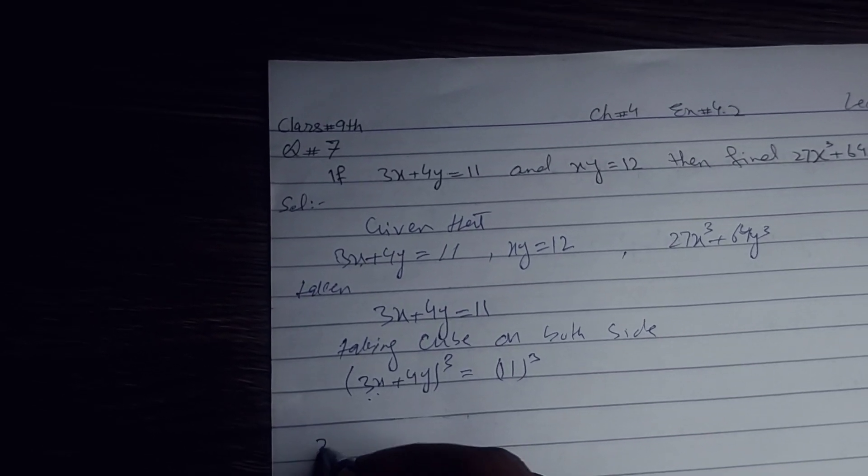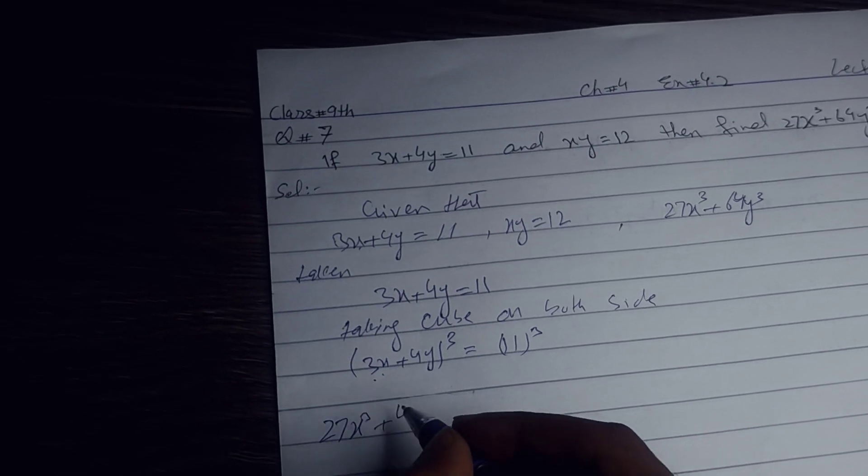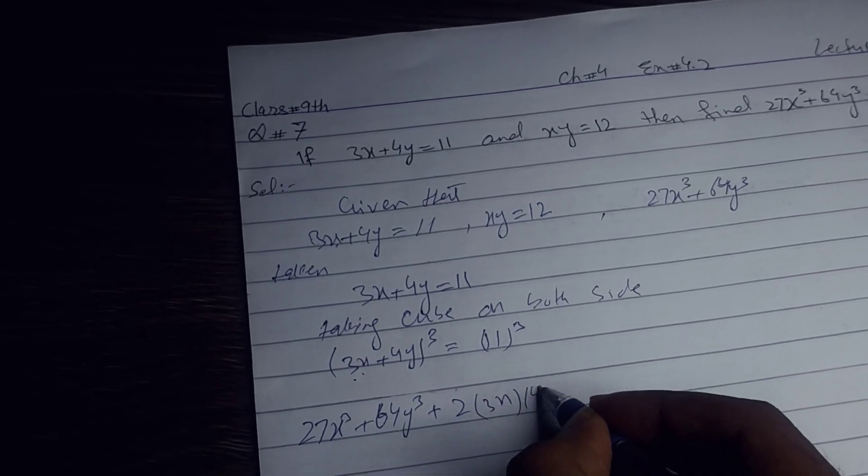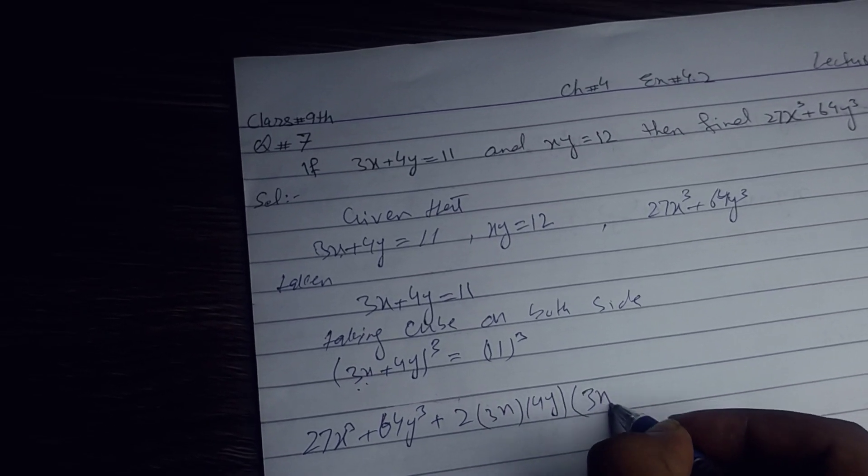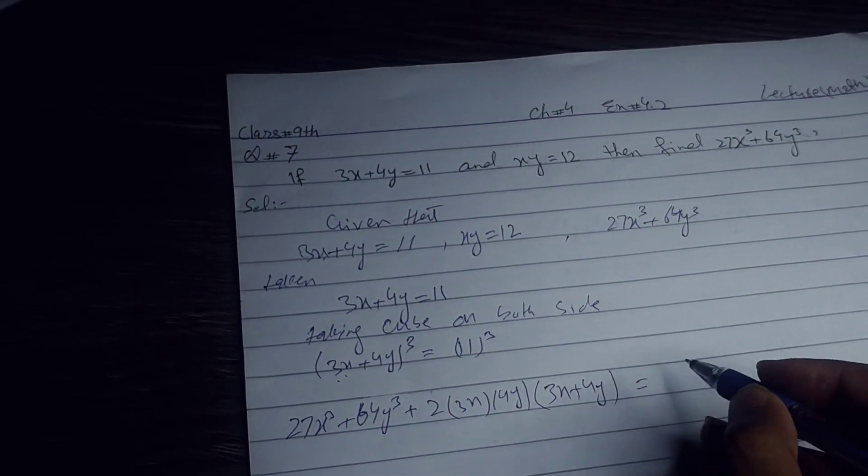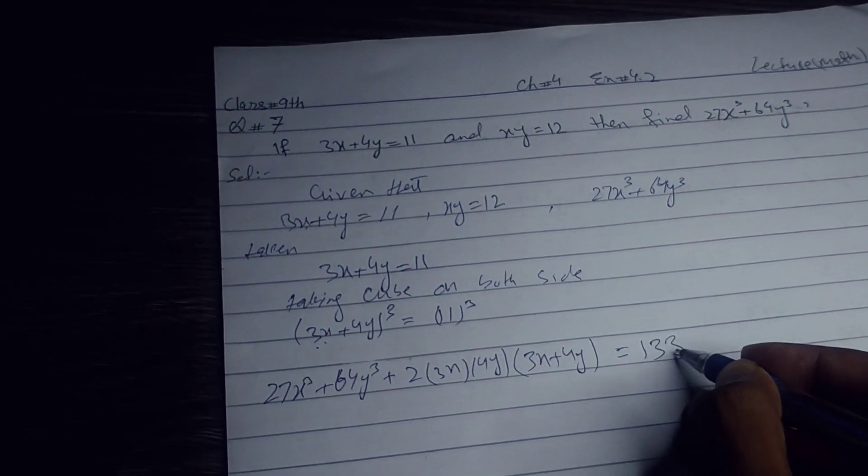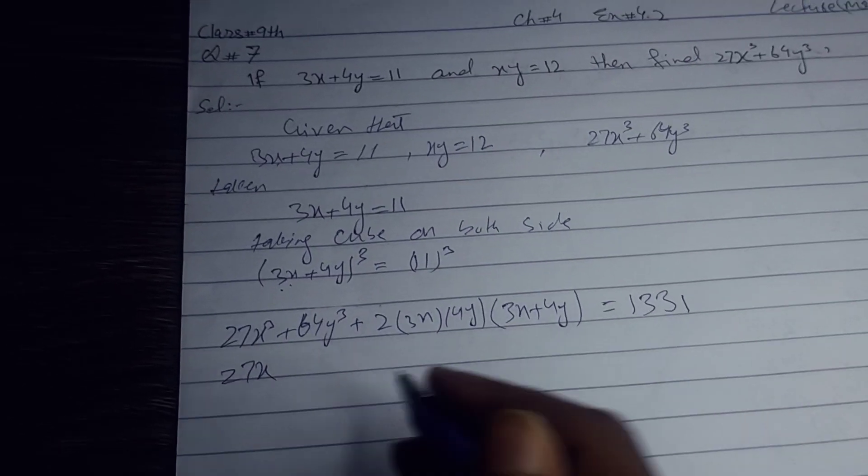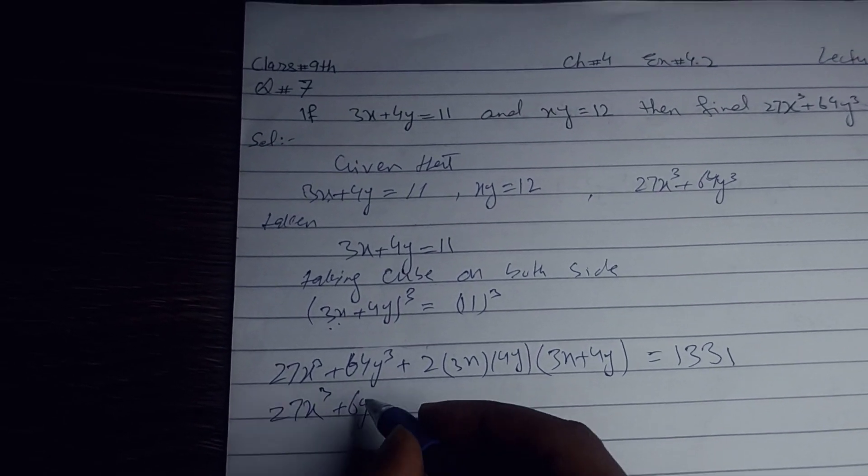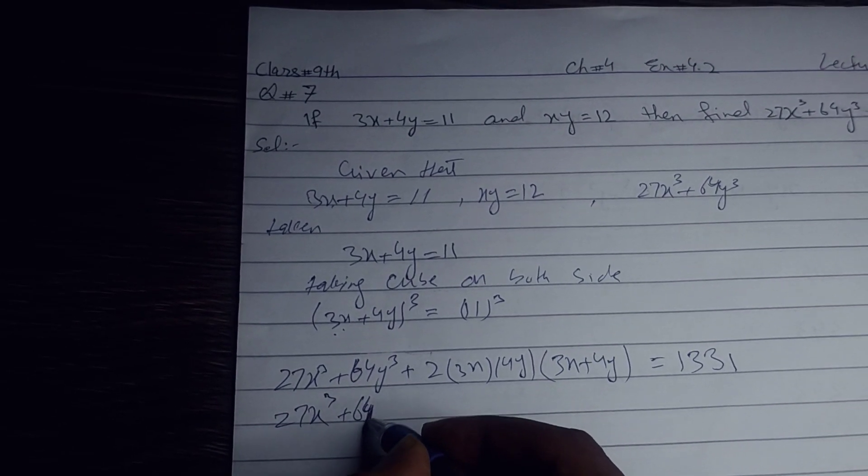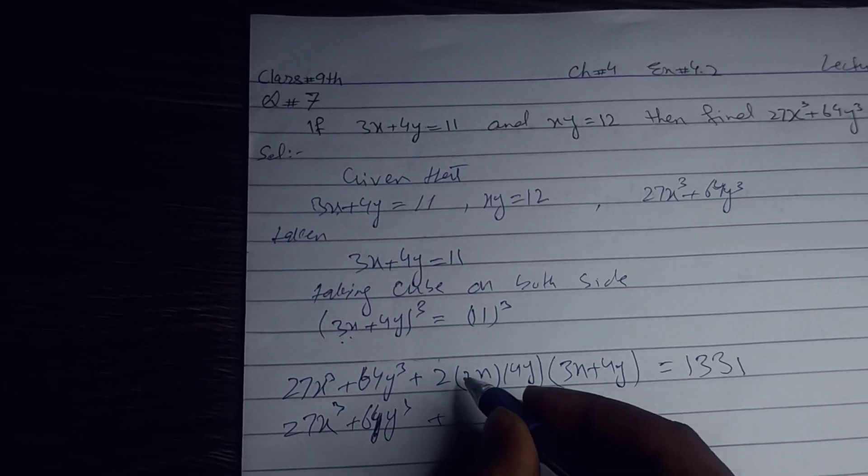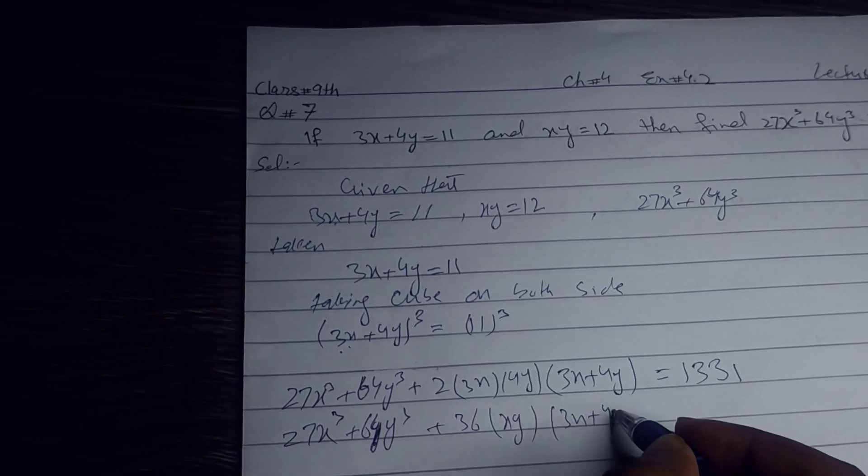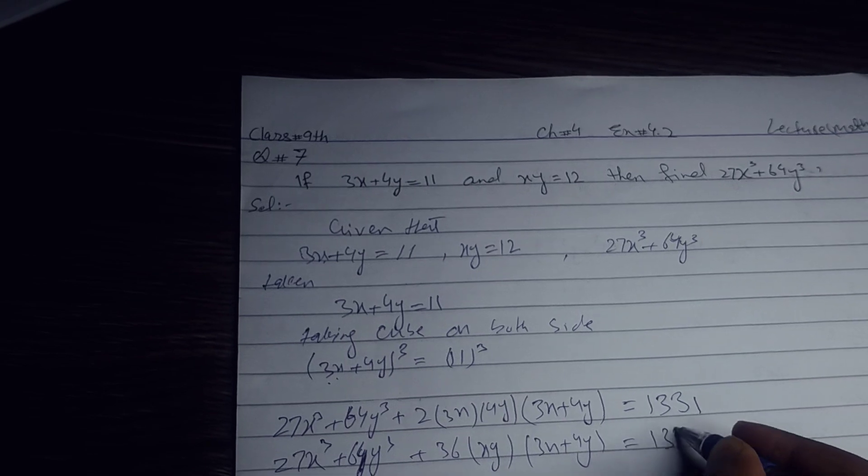(3x)³ is 27x³ plus (4y)³ is 64y³ plus 2 into 3x, 4y, (3x plus 4y) equals 11³, which is 1331. This gives us 27x³ plus 64y³ plus 36xy(3x plus 4y) equals 1331.